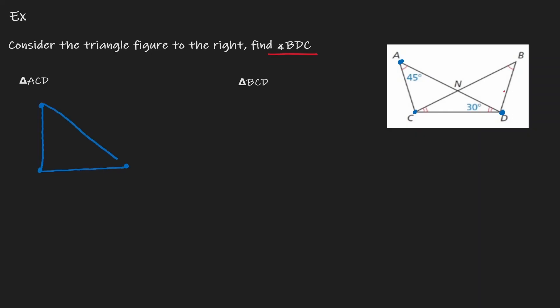What I want to do is copy everything that I know about this triangle. Here's A, here's C, and here's D. I know that angle A has one mark, so let me put that in, and it has a value of 45 degrees. I also see that angle D has two marks, and a value of 30 degrees. That seems to be it for that triangle.